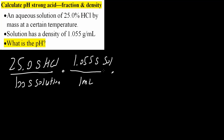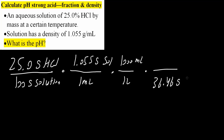We want to calculate molarity — the molarity of HCl. So we need this to be in liters: 1,000 mL is 1 liter. Now we have it divided by liters, but this is still grams of HCl. So we need to use the molecular weight. The molecular weight for HCl is 36.46 grams of HCl, which is equal to 1 mole of HCl.